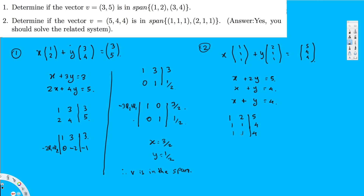The second and third rows are the same, so I can eliminate one by multiplying one by negative and adding to the other. So -R2 + R3 gives [0, 0 | 0]. Now I eliminate the leading 1 in row 2 by doing -R1 + R2, which gives 0 in the first position. Negative 2 + 1 is negative 1, and negative 5 + 4 is negative 1, giving row 2 as [0, -1 | -1].